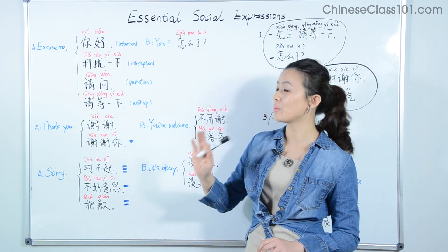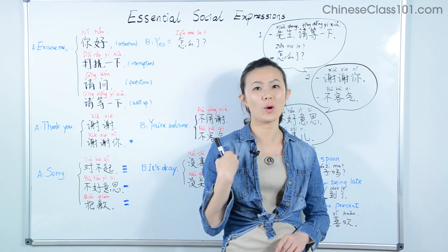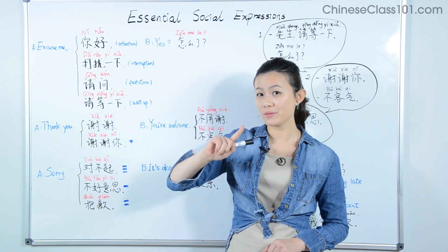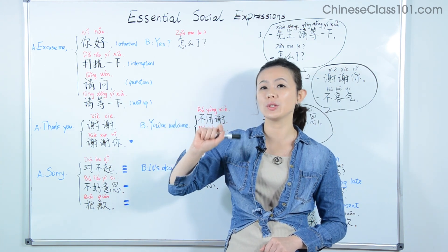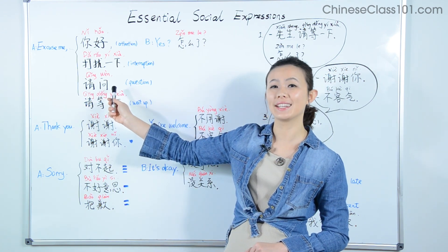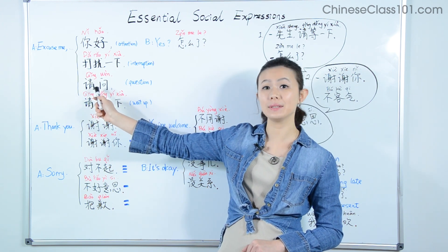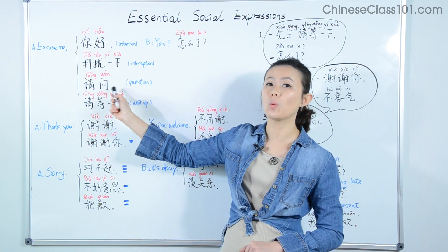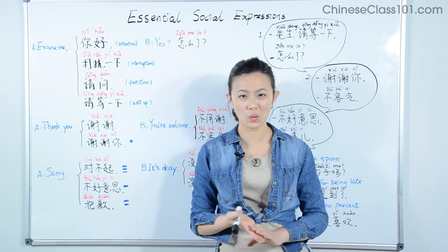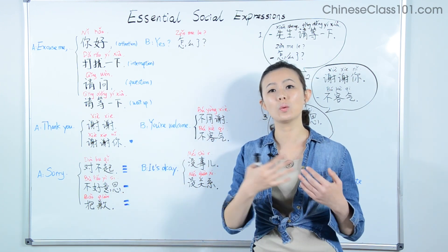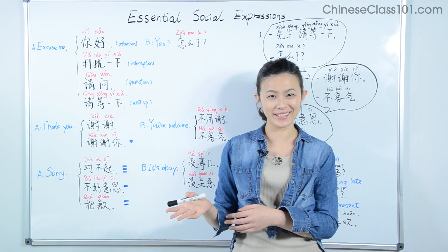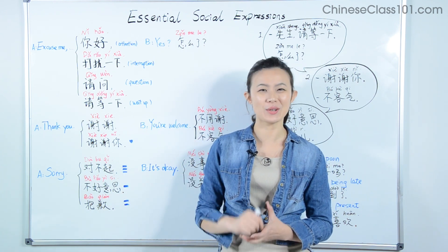Many times when we say 'excuse me,' it's because we have a question. There is one phrase very common in China that we use before asking a question: 请问. 请 means 'please' and 问 means 'ask,' so 请问 is used to say 'May I please ask?' or 'Can I ask you a question?' For example: 请问, 厕所在哪里? — Excuse me, where's the bathroom? Or: 请问, 这个多少钱? — Excuse me, may I ask how much this is?